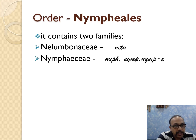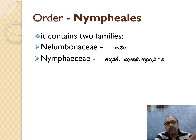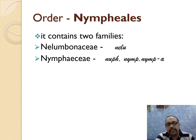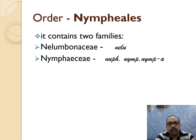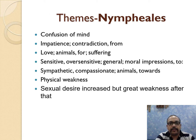Today my topic is Nymphials. In the first subclass, two orders are there — according to Erik Erikson's age classifications and Dr. Mahesh Gandhi's personal evolution model, they are placed in the womb stage: Magnolias and Nymphials. They both are in the womb stage. In Nymphials, there are two families: Nelumbonaceae and Nymphaeaceae.